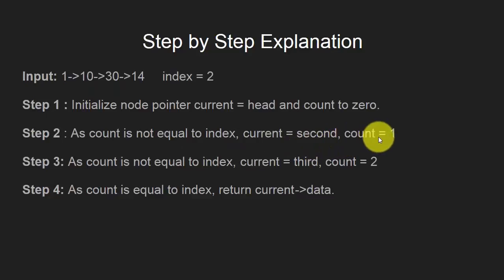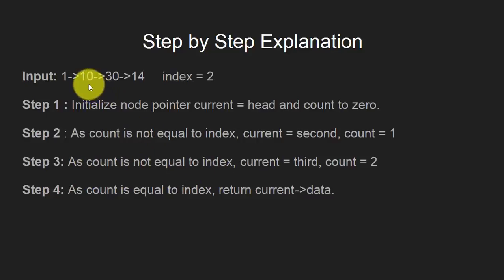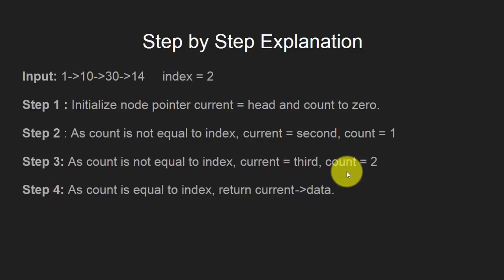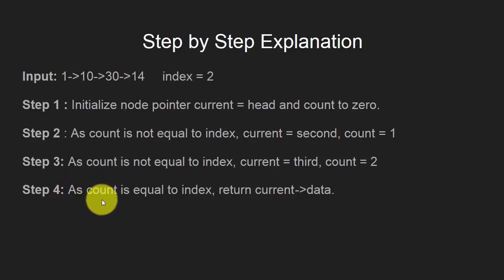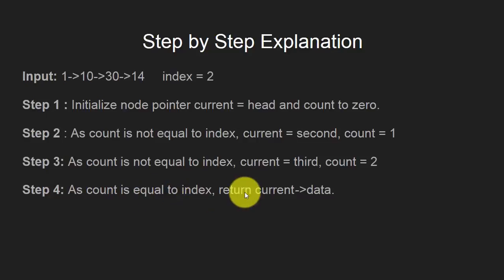We increment count by 1. Again, count is not equal to index, so we change the current pointer to point to the third node and increment count by 1, so count becomes 2. Again, we check whether count is equal to index. Now count is equal to index, so we return the data stored in the third node. So we return 30. This is how we get the data stored at a particular index in a linked list.